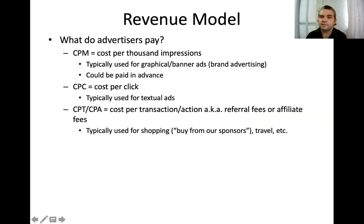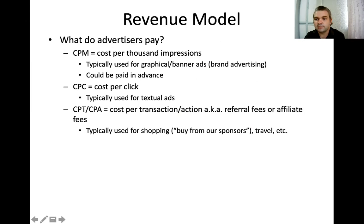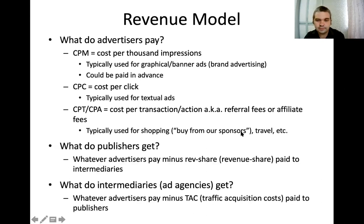There are different revenue models for ad systems. CPM — cost per thousand impressions — is usually used for graphical banner ads and brand advertising, and can be paid in advance. CPC — cost per click — is typically used for contextual ads and search engines. There is also CPA or CPR — cost per action, cost per transaction, or cost per result — usually used for shopping and affiliate fees. Basically, if you receive a transaction, you pay for the ad; if not, you don't pay. Publishers receive a revenue share from ads shown on their website, and intermediaries like ad agencies or systems that manage all of this take a cut — a margin on top of the money spent.